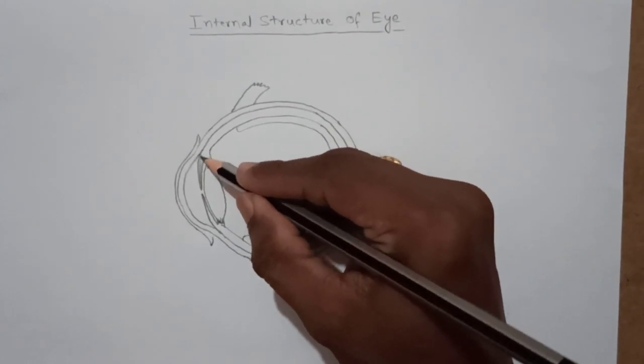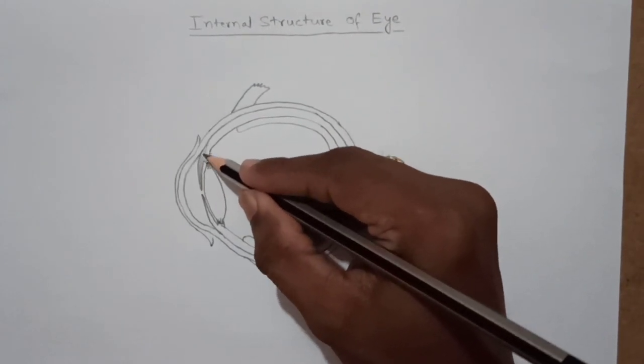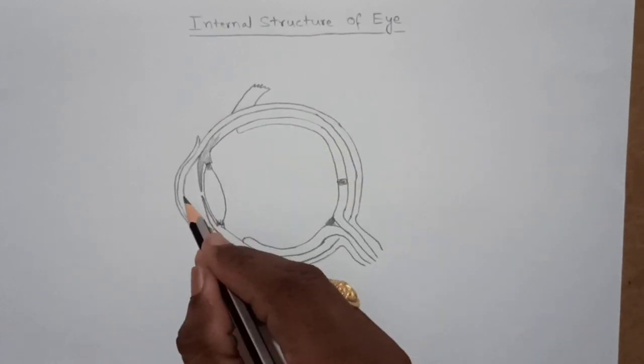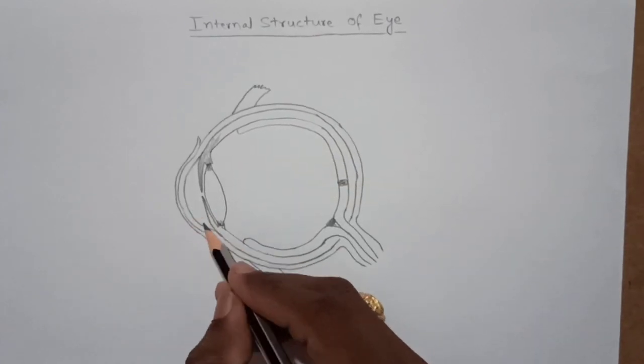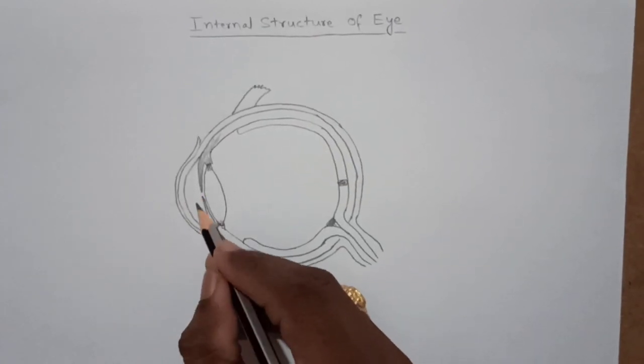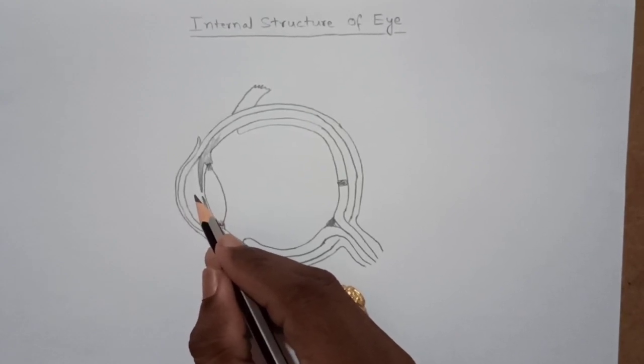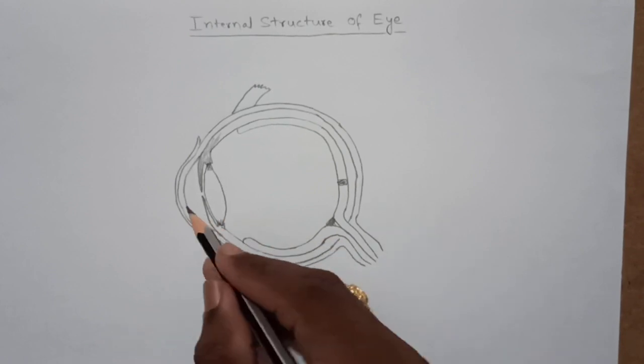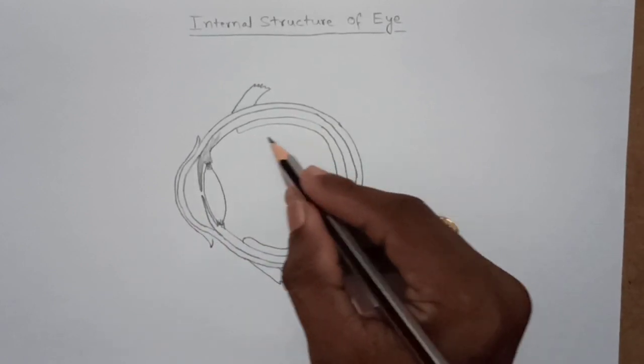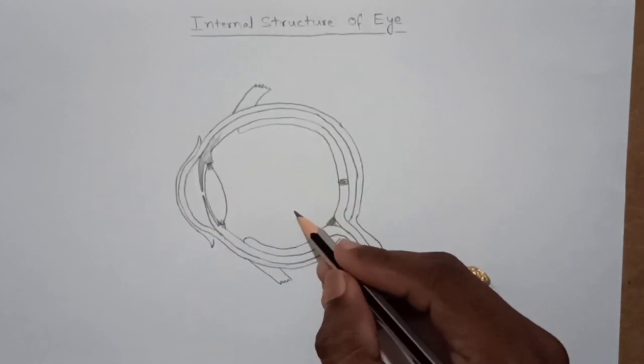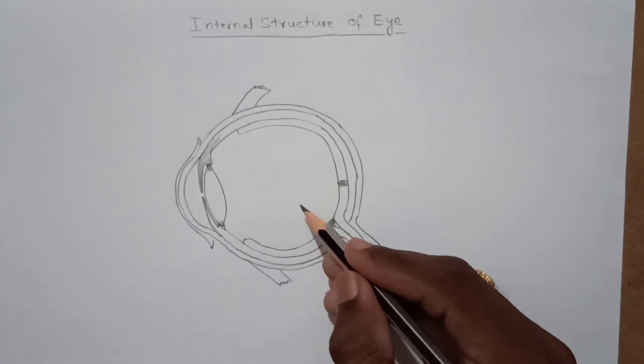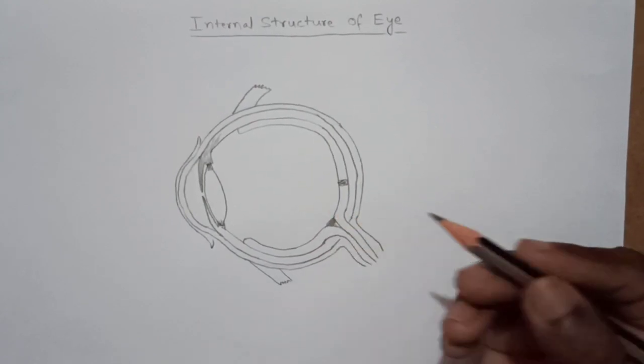The corner of the cornea, we can observe some space here. It is filled with some jelly-like substance. It is called aqueous humor. And here inside this chamber, we can observe the dense jelly-like structure. It is called as vitreous humor.